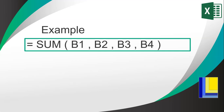The SUM function can take two values, four, or a whole bunch of values. Whatever those arguments are, it takes the values in each of those cells, adds them together, and returns one answer. So there's the function name, the brackets, and the arguments.